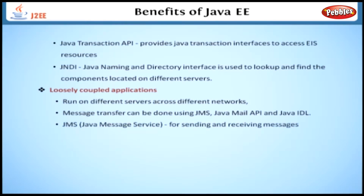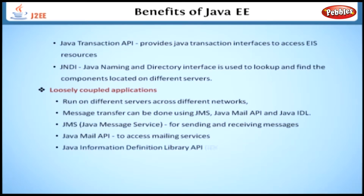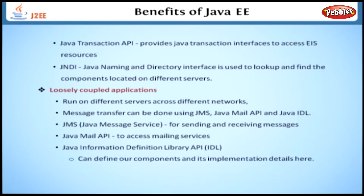JMS, or Java Message Service, is used for sending and receiving messages. Java Mail API is used to access mailing services. Java Information Definition Library API, or IDL — we can define our components and their implementation details here.